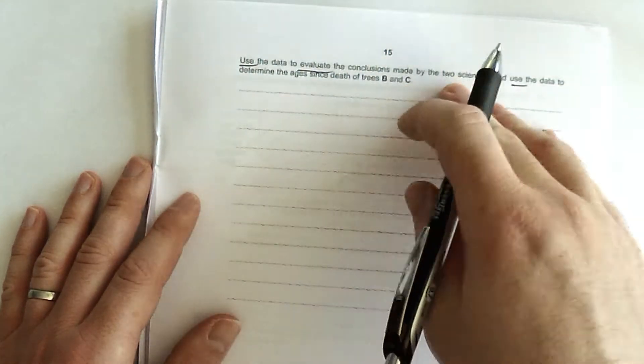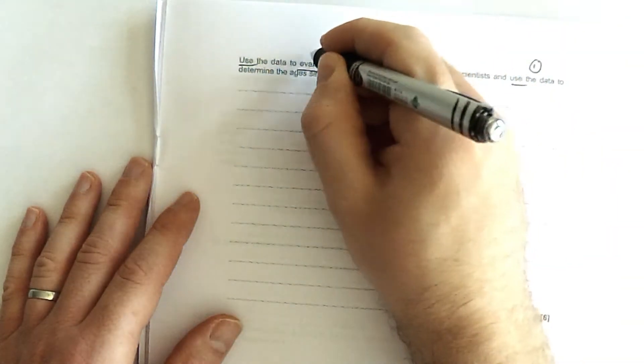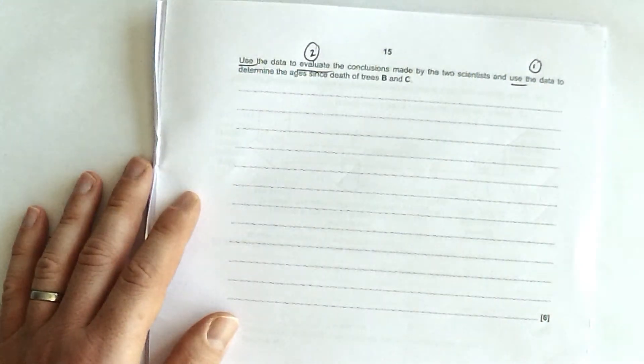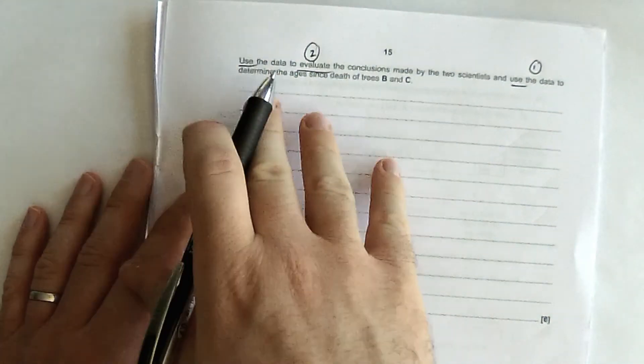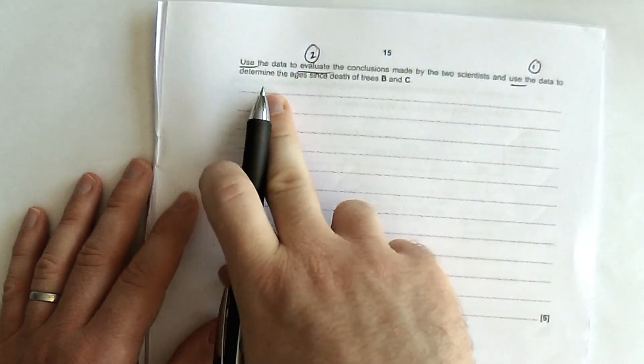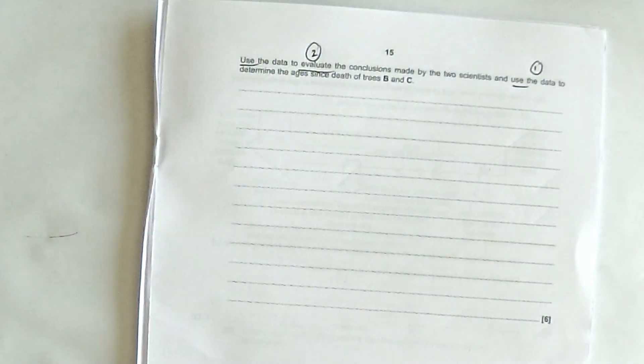Use the data to evaluate the conclusions made by the two scientists, and use the data to determine the ages since the death of trees B and C. So here's our two paragraphs. Now, I must admit, this is not the way around I would do it. I'd probably use the data to determine the ages first, and then use that to evaluate the conclusions made. So there's my two paragraphs. So I'm going to go back to that and try and work out the ages since the death of trees B and C. I'm definitely going to get some marks from that.